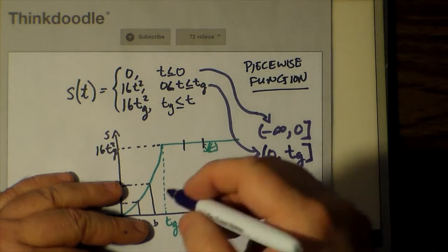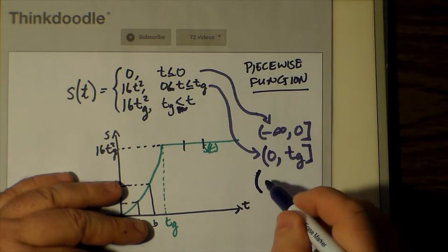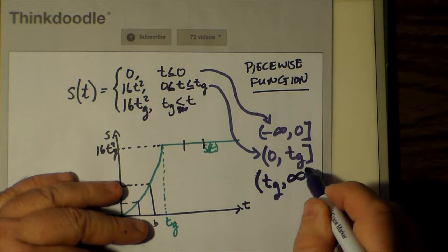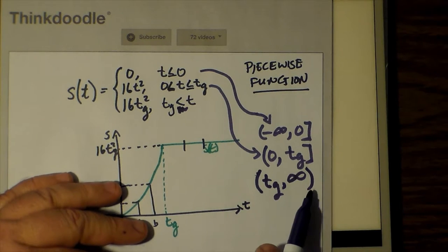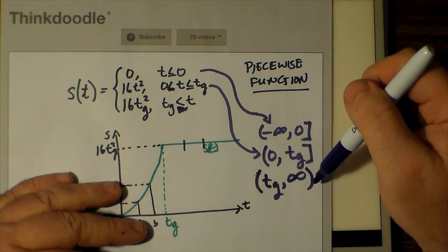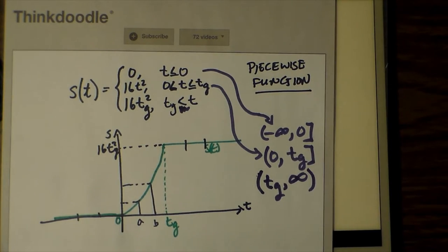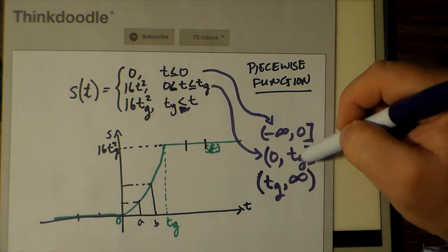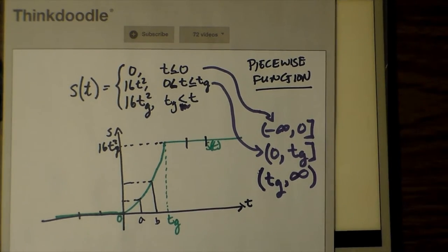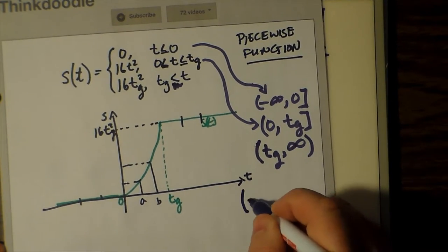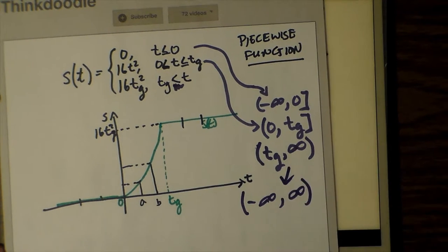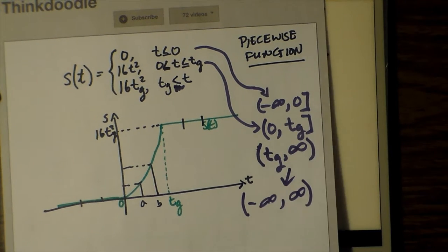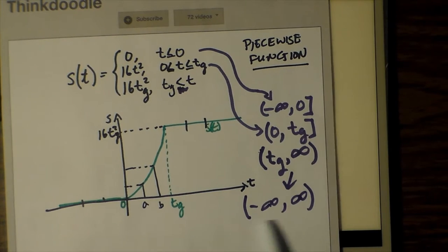Where t is greater than t_g, that interval is open both on t_g and on infinity because t_g was already closed in the previous interval. Infinity is always shown in interval notation as open since it's not an actual number. The domain of s is the union of all three of these sub-intervals, in effect saying that the domain of the function as a whole is between minus infinity and infinity, or the set of all real numbers.